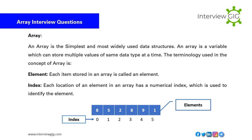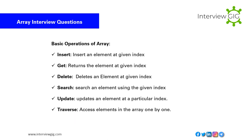Each location of an element in an array has a numerical index which is used to identify the element. Basic operations on an array: Insert — insert an element at a given index; Get — return the element at a given index; Delete — delete an element at a given index; Search — search an element using the given index; Update — update an element at a particular index; Traverse — access elements in the array one by one.